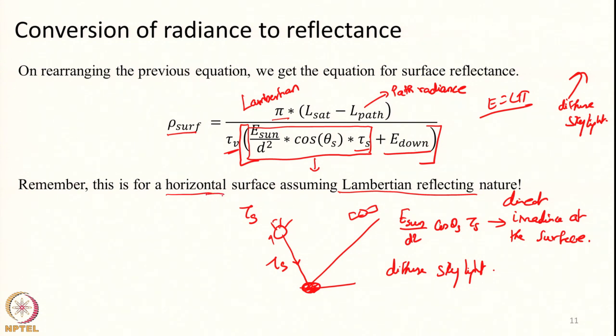This equation is derived assuming the surface is horizontal and Lambertian reflecting. If the surface is not horizontal, we need to do what is known as a topographic correction, which I will explain later. This equation essentially helps us convert the radiance recorded at the sensor to surface reflectance, which is our real interest. We need to know L_path, τs, τv, and E_down. If we have those values, it is easy to correct — and getting those values and substituting them into this equation is essentially the process known as atmospheric correction.